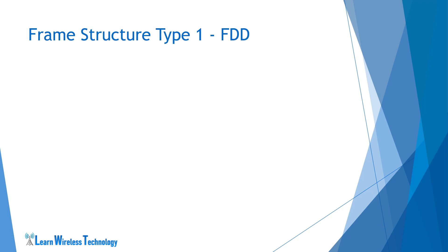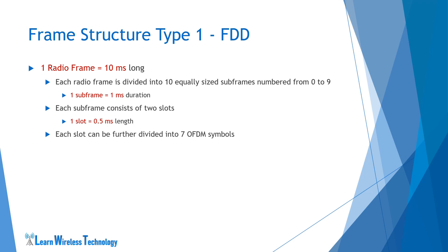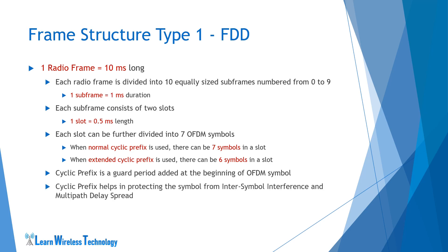Here's the summary of Type 1 radio frame: 1 radio frame equals 10 ms duration. Each radio frame is divided into 10 equally sized subframes numbered from 0 to 9. 1 subframe equals 1 ms duration. Each subframe consists of 2 slots; 1 slot equals 0.5 ms. Each slot can be further divided into 7 OFDM symbols with normal cyclic prefix or 6 OFDM symbols with extended cyclic prefix. Cyclic prefix is a guard period added at the beginning of the OFDM symbol, helping to protect against inter-symbol interference and multipath delay spread.